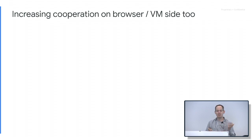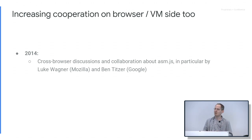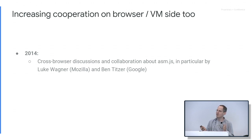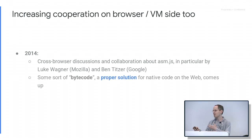There was more and more cooperation on the browser and VM side too. In 2014, the VM people — those working on JavaScript engines — talked more about asm.js, since they were each optimizing it in their own way and started discussing how to optimize it better and what the future in this area should be. In particular, Luke Wagner from Mozilla and Ben Titzer from Google talked quite a lot about this. The idea of a bytecode — a more proper solution — kept coming up. You're talking about asm.js and how to optimize it, but it's natural to think about how to do better in this space.